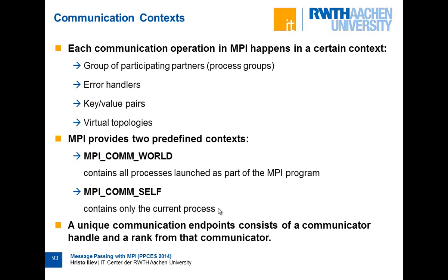Because communicators cannot change over time — their set of processes remains fixed — precomputed data stored in a communicator won't become stale. Each communicator also has a topology associated with it, describing how processes are organized. MPI allows you to build virtual topologies: for example, if your program works on a grid or matrix, you can assign each process a set of Cartesian coordinates, then easily compute the rank of neighboring processes (right, top, left, bottom) without writing the mathematics yourself.